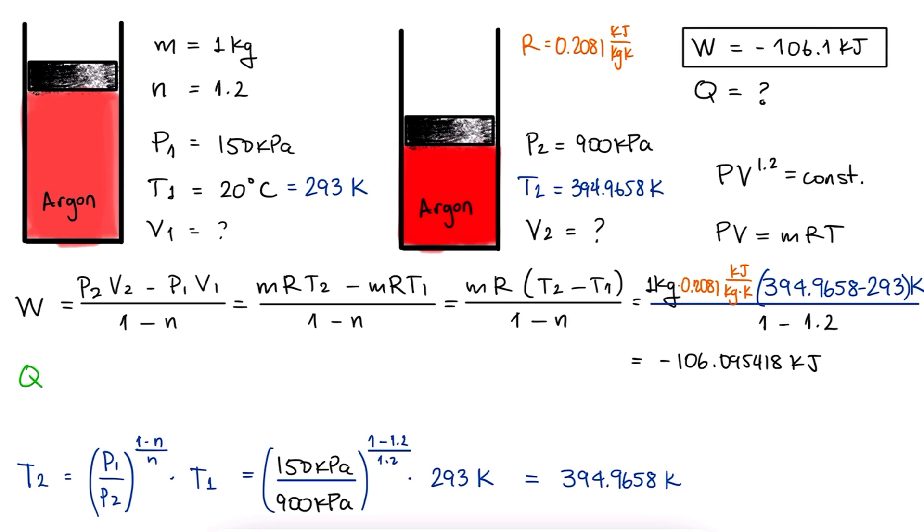Now, what about the transferred heat? Using our conservation of energy equation, we have that Q minus W is equal to the change in internal energy. This means that Q, what we're looking for, is the work we just found, plus the change in internal energy.